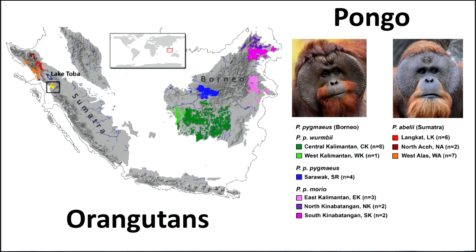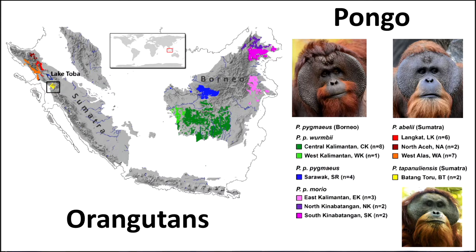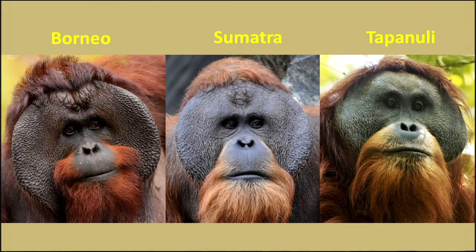What about orangutans? Pongo is the genus. Until recently there were two species: Pongo pygmaeus from Borneo on the left, and Pongo abelii from Sumatra on the right. Pongo pygmaeus from Borneo has three subspecies: wumbii, pygmaeus, and morio. Abelii doesn't have subspecies but is a smaller group. Recently a new orangutan species has been detected near Lake Toba — Pongo tapanuliensis, also in Sumatra. The Borneo one has beautifully rough skin and a deep orange beard, compared to the Sumatran one which doesn't have as rough a fringe around its face.